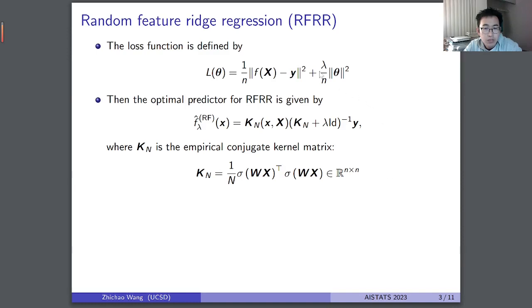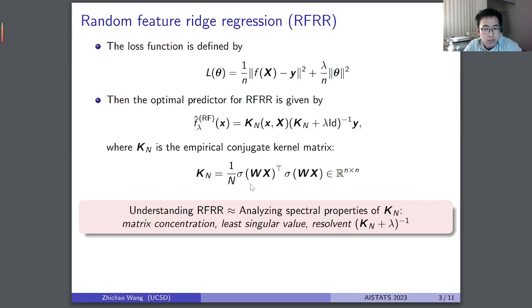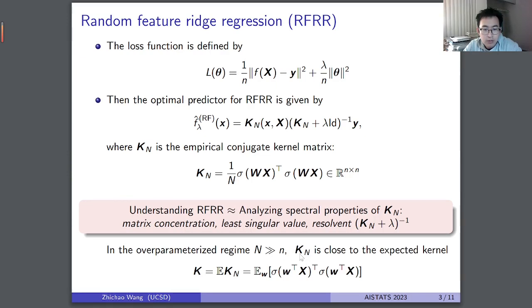We consider the random feature regression with regularization parameter lambda. The predictor can be written in terms of K_N, which is the empirical conjugate kernel — a sample covariance matrix. In the over-parameterized regime where N is much larger than the sample size, we need to understand the spectral properties of K_N, such as concentration of K_N, its least singular value, and its resolvent. It turns out this empirical kernel K_N is close to the expectation kernel, capital K.